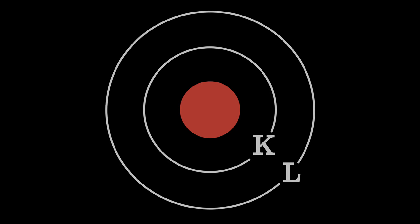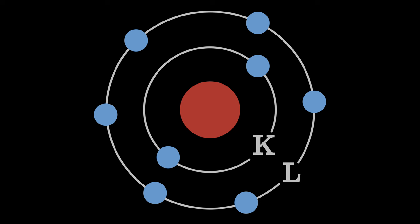In atomic physics, the electron shell model describes the distribution of electrons on the energy shells of an atom in the periodic table of elements.